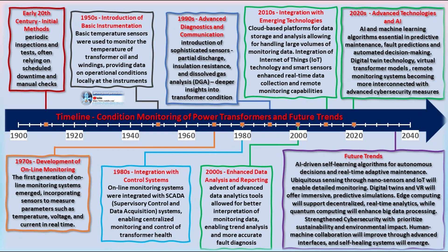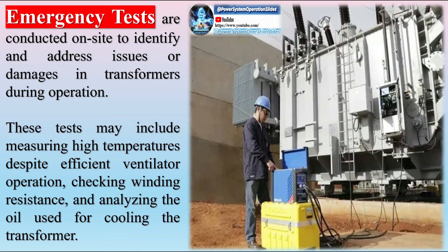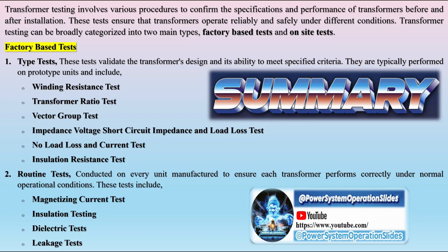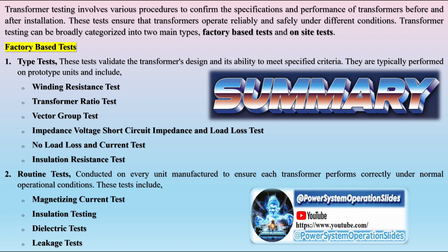On-site tests include: (1) Pre-commissioning tests, performed before the transformer is put into service to assess its condition after installation, comparing results with factory test reports, including insulation resistance test, dielectric tests, and polarity and phase relation tests. (2) Periodic condition monitoring tests, conducted regularly to monitor the transformer's health and performance over time, helping in early detection of potential issues. (3) Emergency tests, performed in response to specific incidents or faults to diagnose and address problems quickly, crucial for maintaining the reliability and efficiency of transformers throughout their service life.